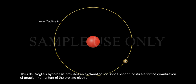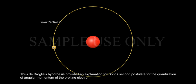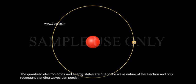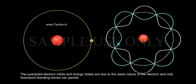Thus De Broglie's hypothesis provided an explanation for Bohr's second postulate for the quantization of angular momentum of the orbiting electron. The quantized electron orbits and energy states are due to the wave nature of the electron.